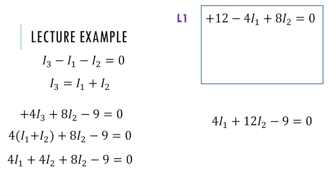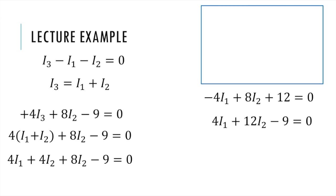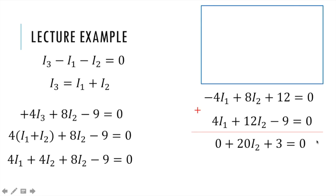There's a nice trick for this problem: you can add two equations together. Since I have a negative 4I1 in one equation and a positive 4I1 in the other, adding them together eliminates the I1 terms. Negative 4I1 plus 4I1 adds to zero. Now we have 8I2 plus 12I2 giving 20I2, and 12 minus 9 giving 3. The only variable left is I2, so we divide: I2 equals 3 divided by 20, which gives I2 equals negative 0.15 amps.